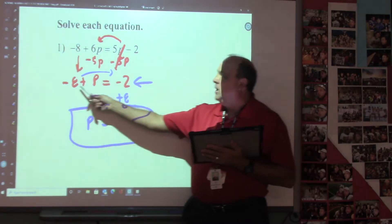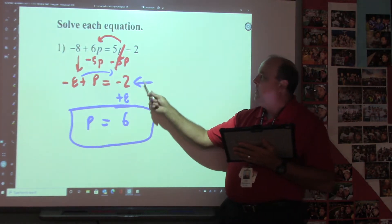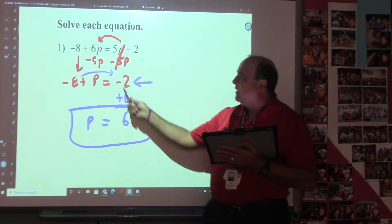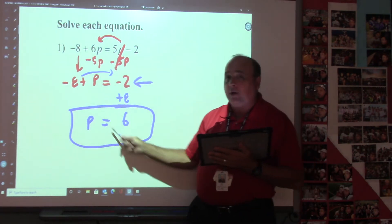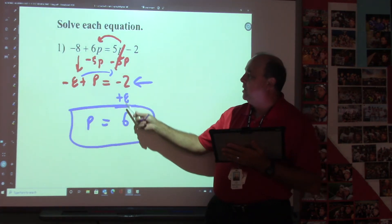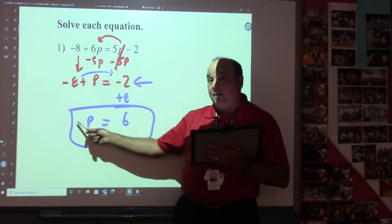So remember, get the equation to where it looks like this. Type this number in. Add or subtract that number across, and then divide by the coefficient. So -2 + 8, enter. And then you don't have to divide.